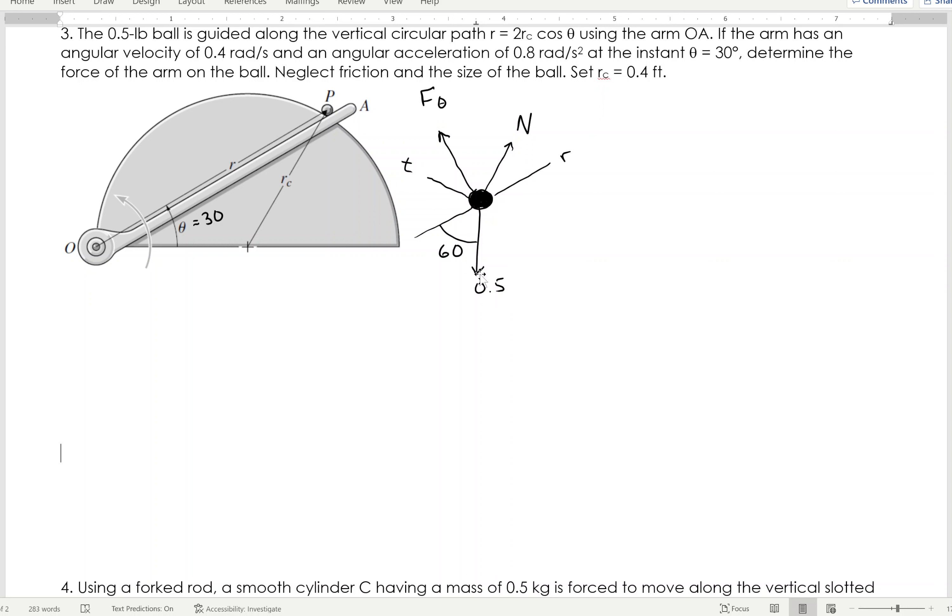So again, what I have here is my ball, and I'm going to draw a free body diagram. So the first thing I'm going to do is I'm going to draw my vertical, that is 0.5.